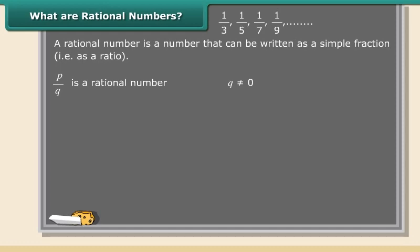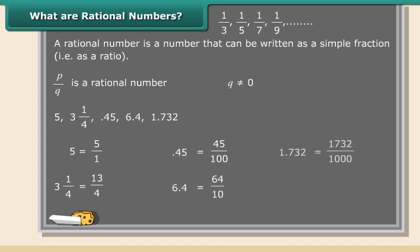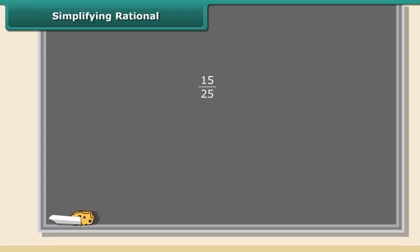Can you tell which of these numbers are rational? Yes, all of them are rational. So rational numbers are simply the numbers of arithmetic.